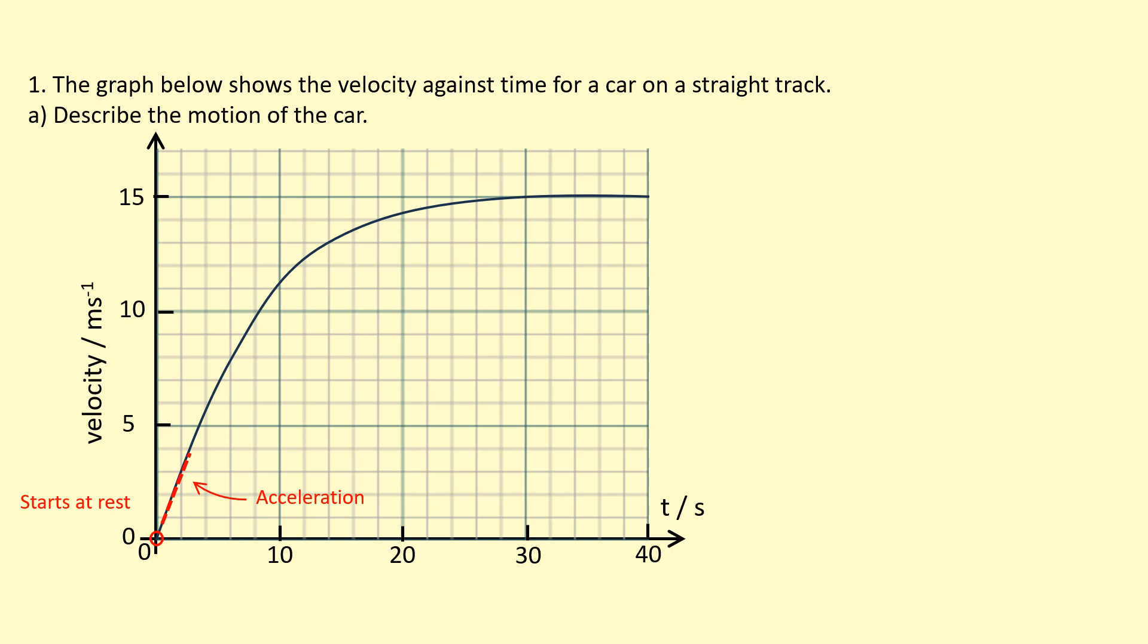However, the acceleration isn't constant, it's not speeding up at a steady rate. So this is where we use the fact that the gradient of a velocity time graph should equal acceleration. Let's see how the gradient changes. So the steepness of the graph, as you can see, is decreasing with time, so that means the acceleration is decreasing.